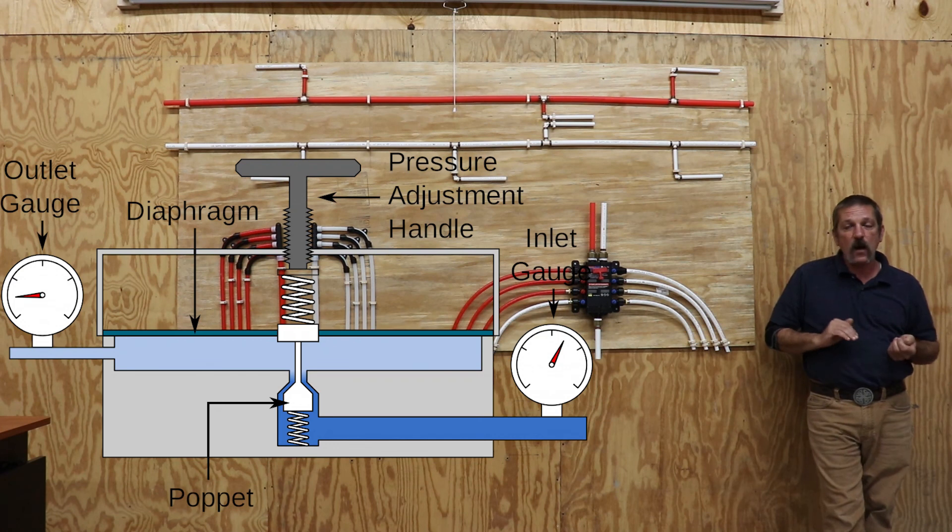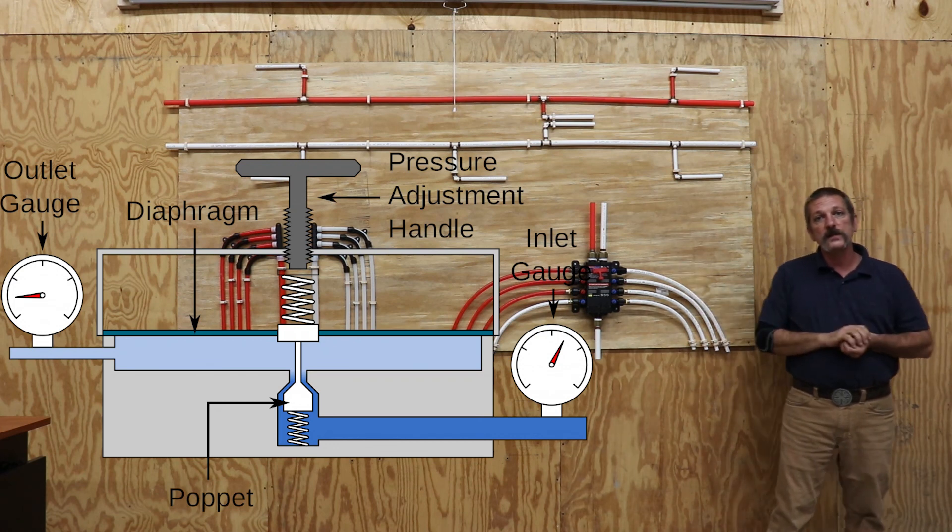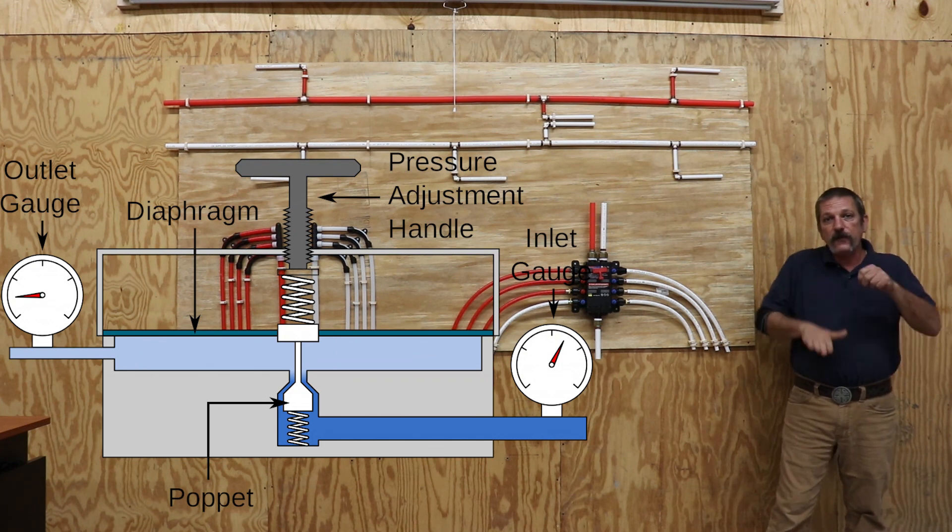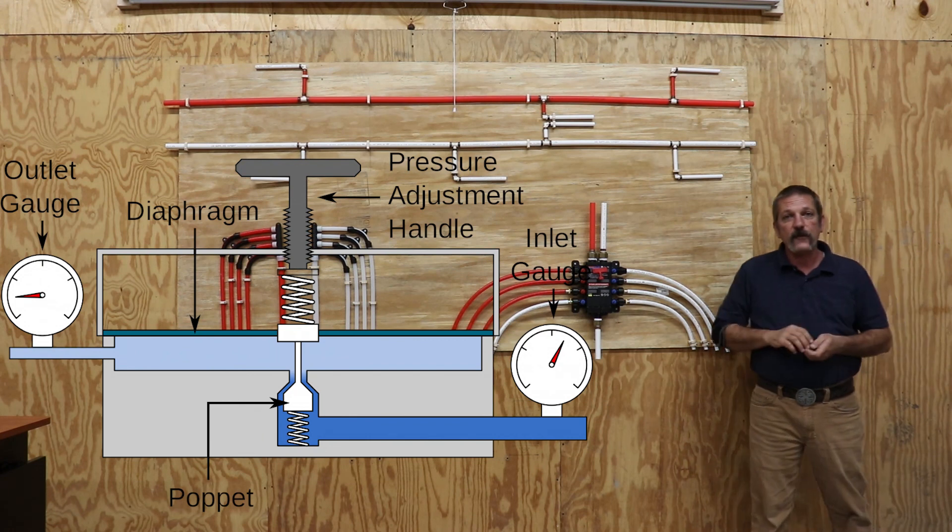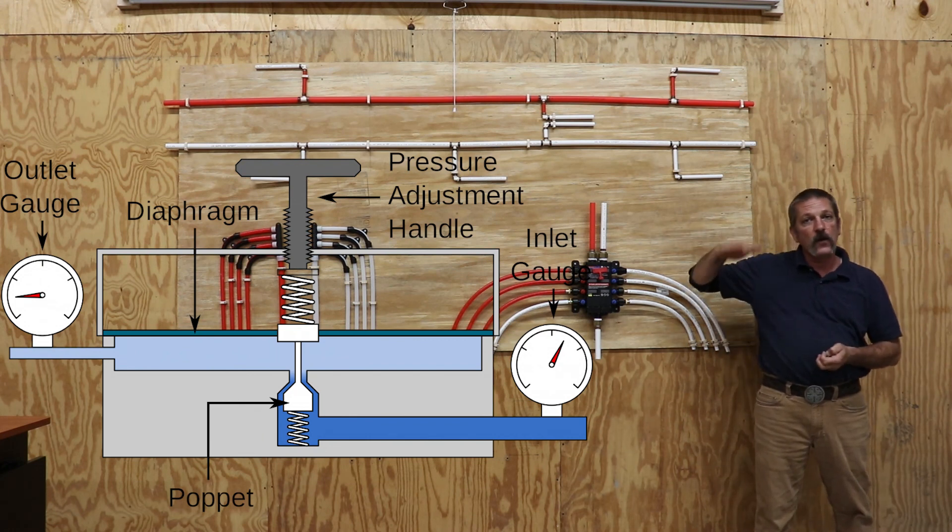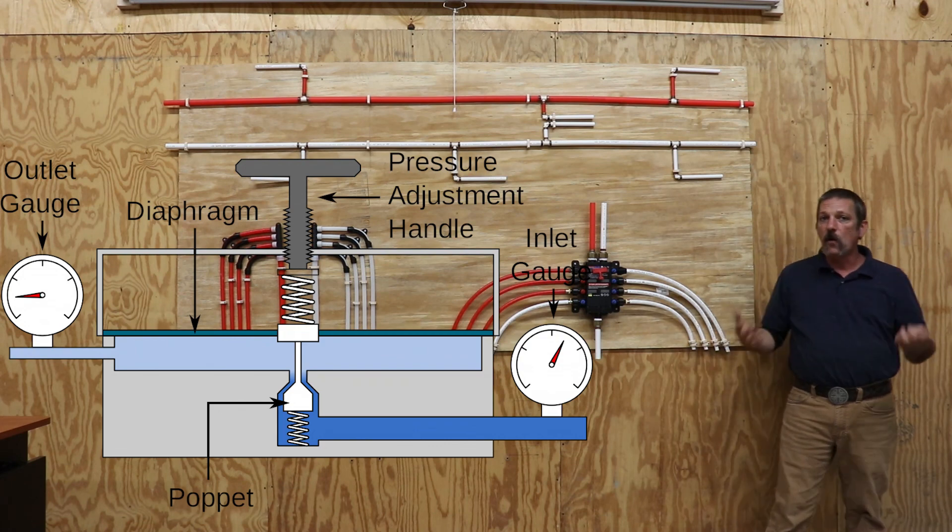Now if those pressures are jumping back and forth, same thing. It's still working off of that diaphragm. It just means that poppet and that diaphragm and that spring are going to be hopping back and forth a little bit more than they normally would.